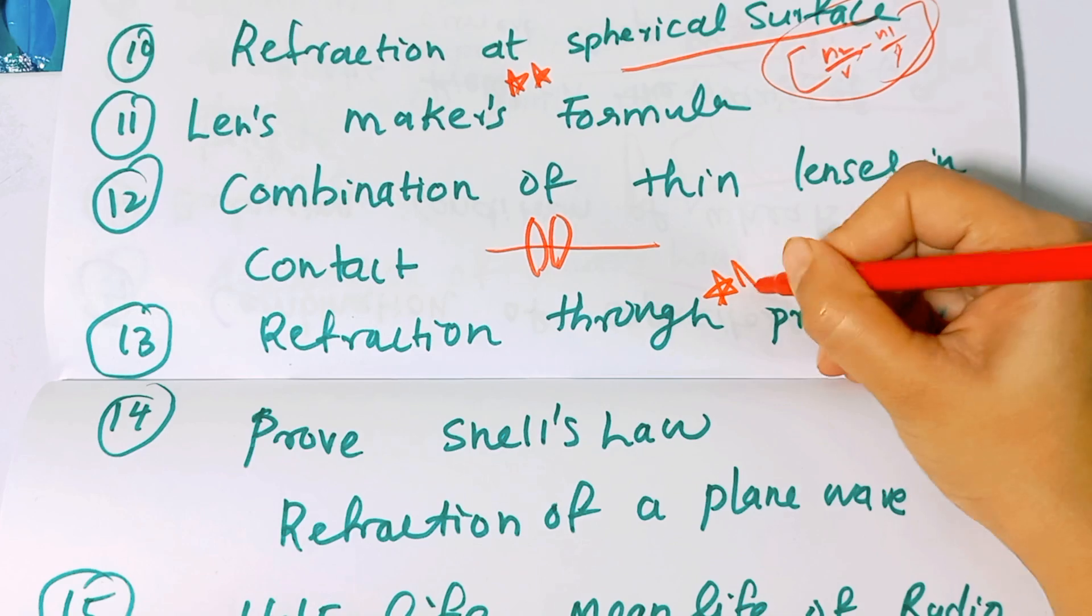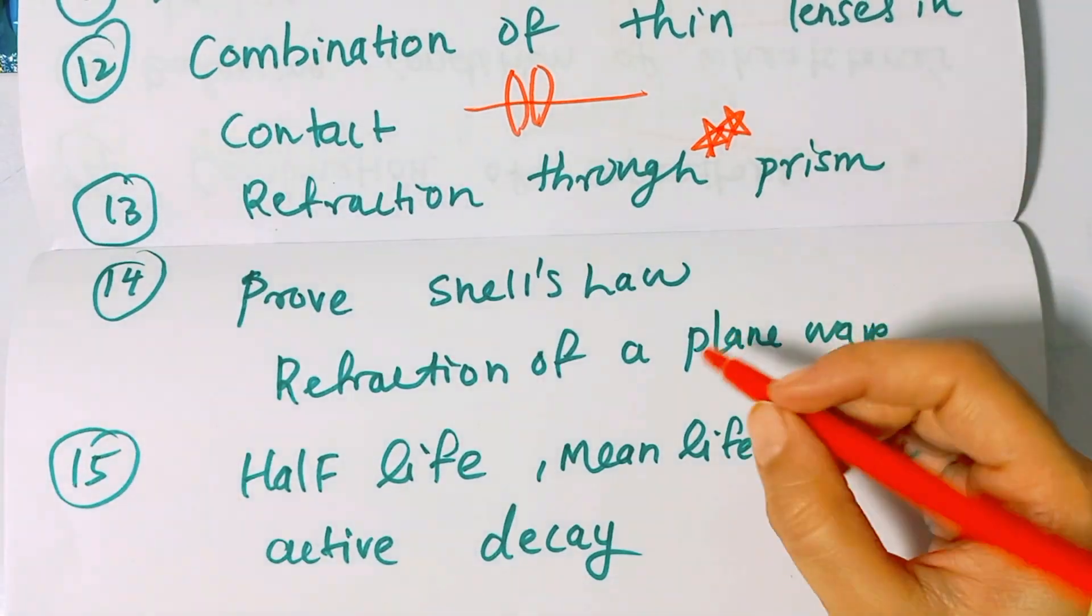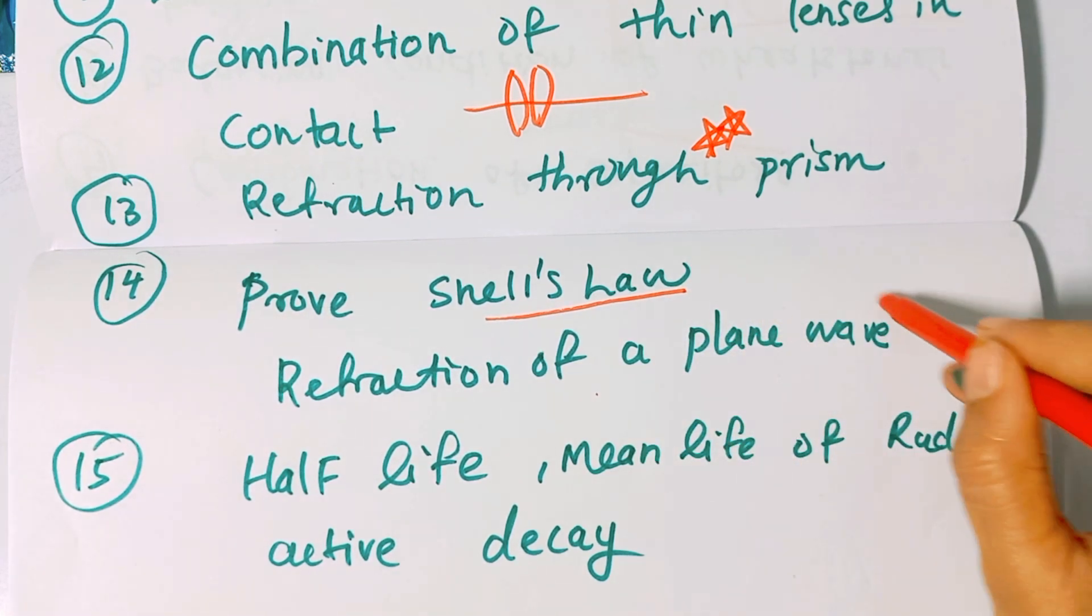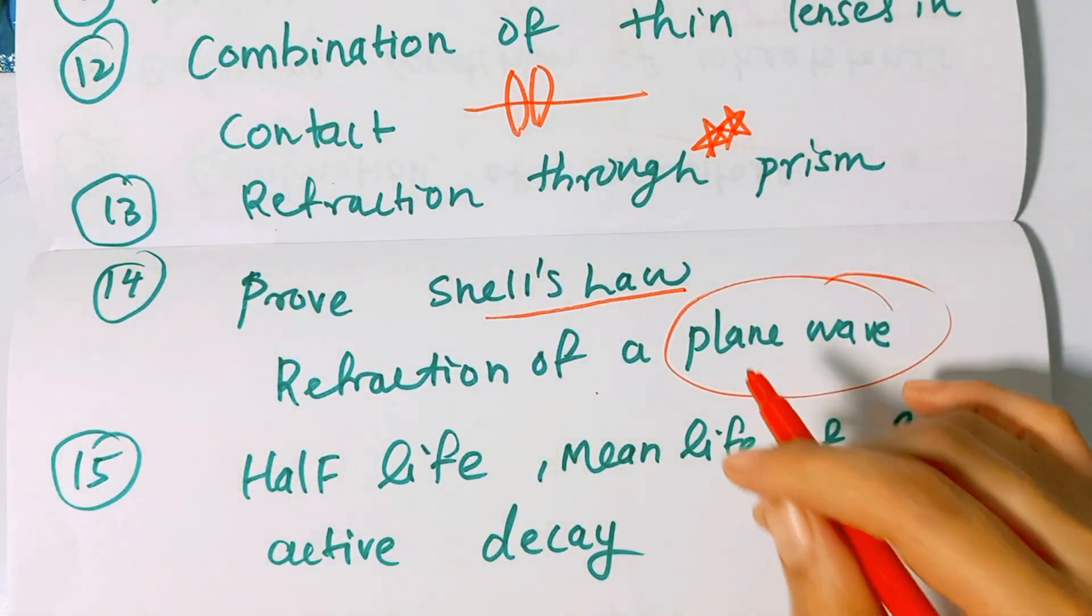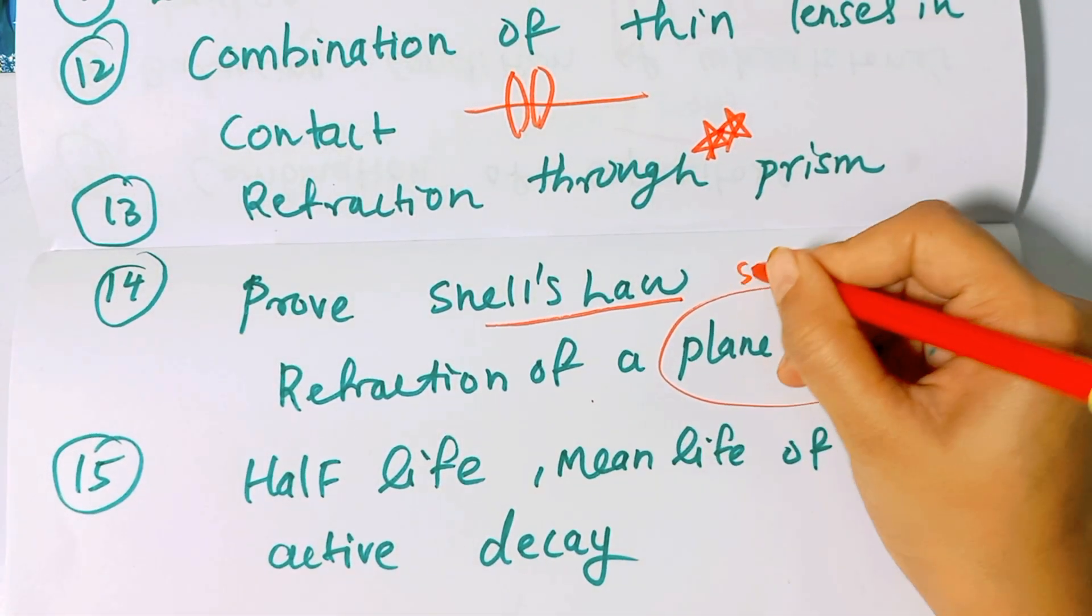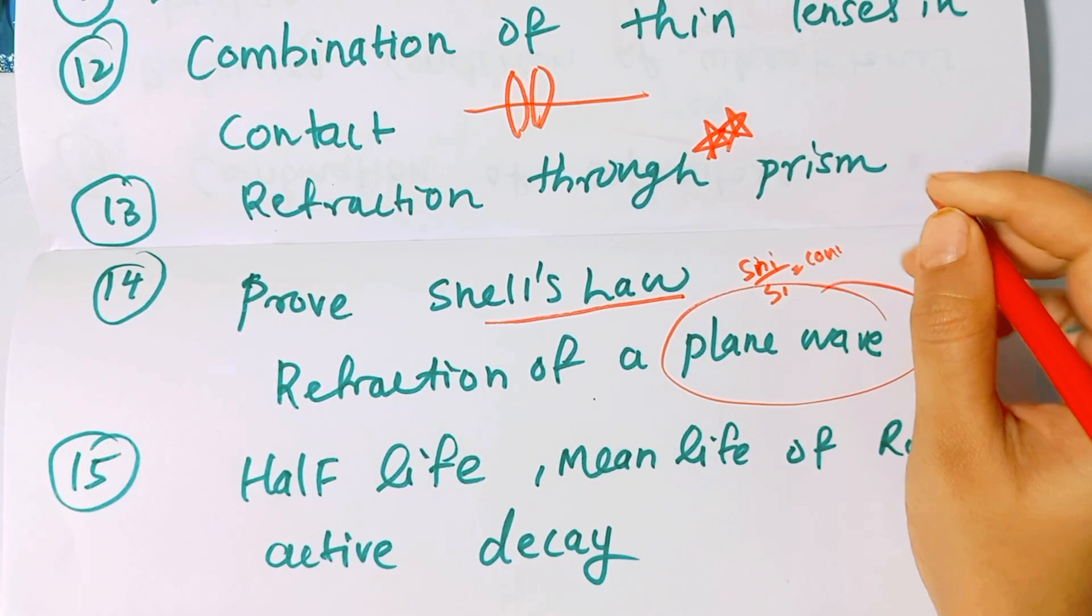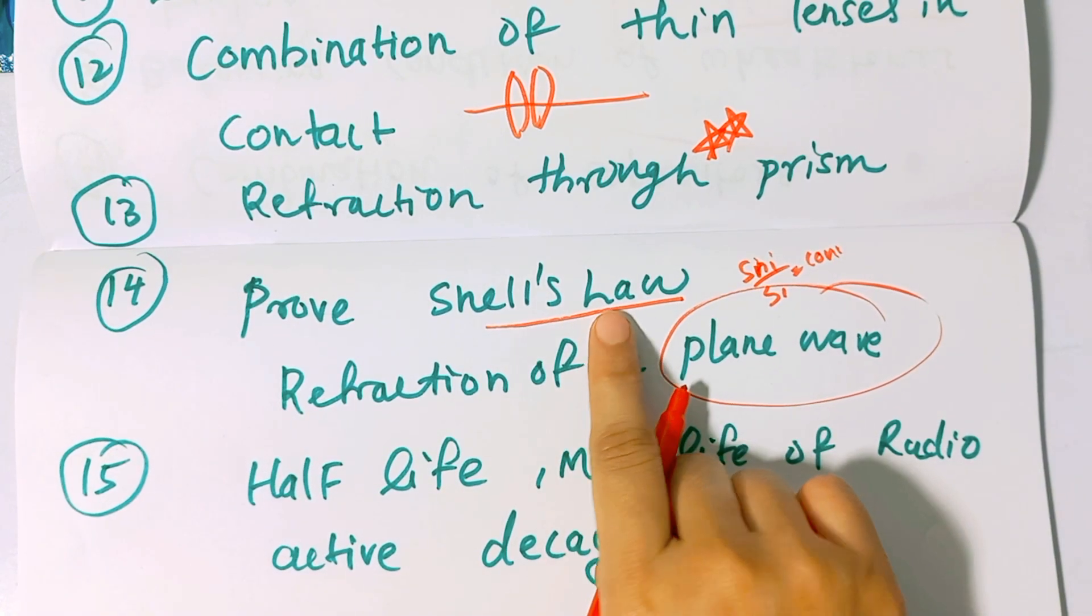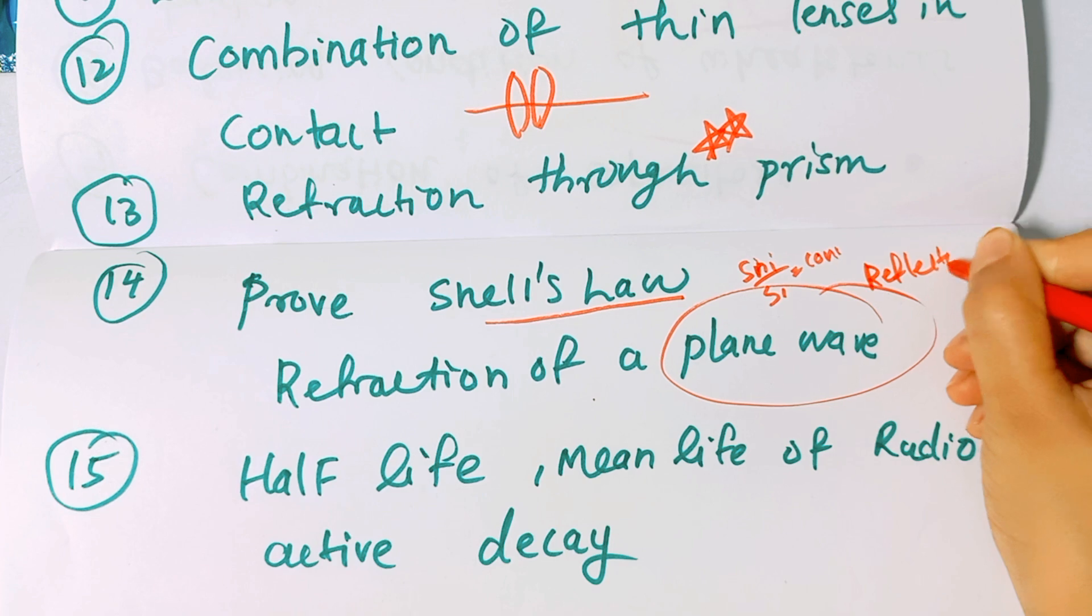Refraction through prism is very important. In wave optics, derive an expression for refraction of a plane wave and prove Snell's law: sin i by sin r equals a constant.